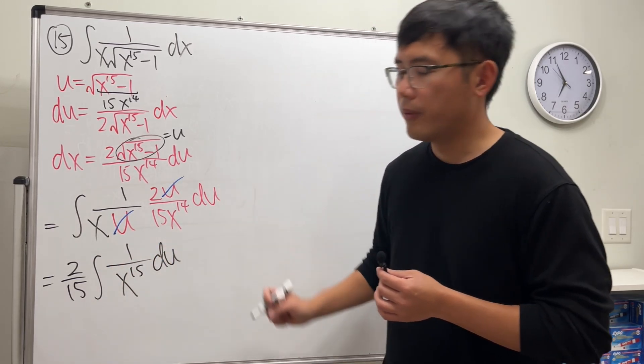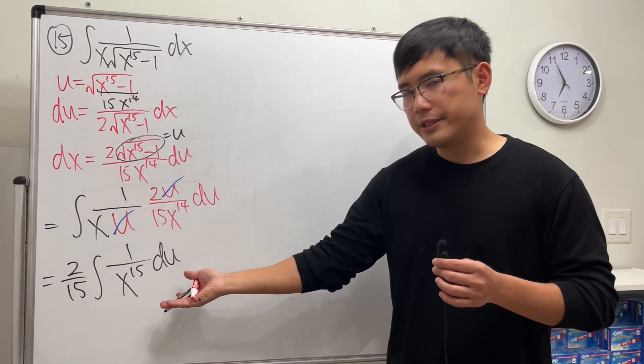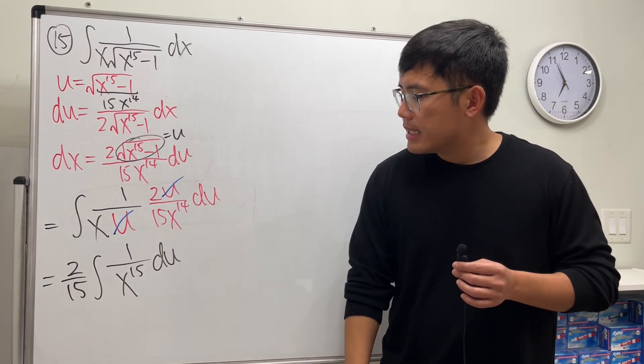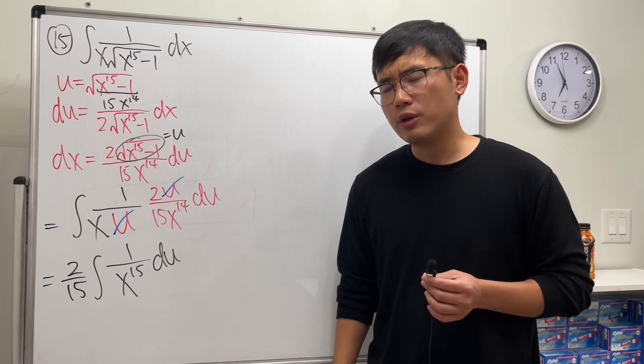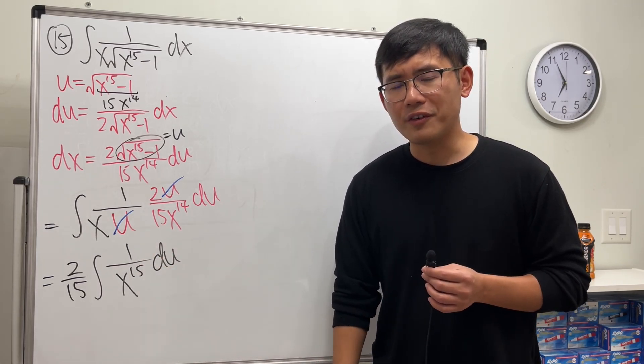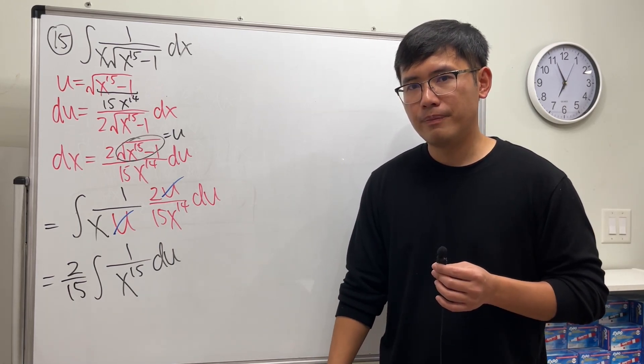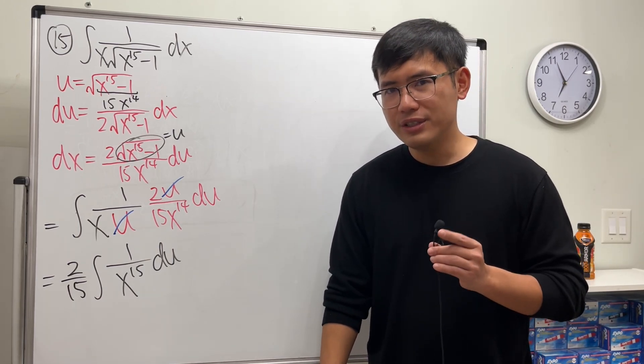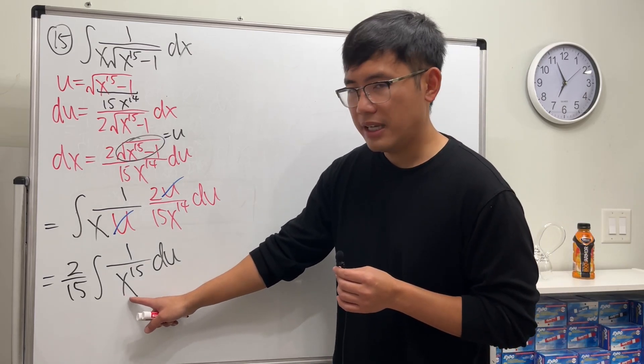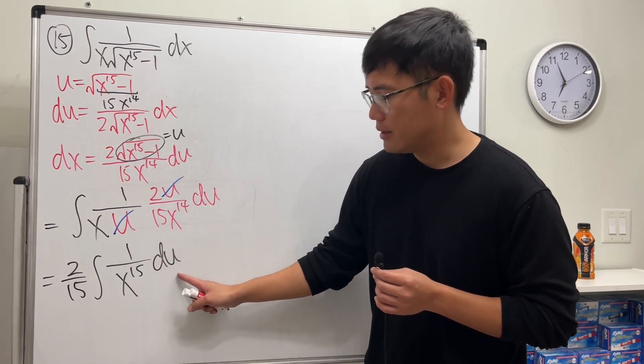Can we use the reverse power rule? Write this as x to the negative 1 over 15 and then just add 1 to the power and divide it by the new power? No.